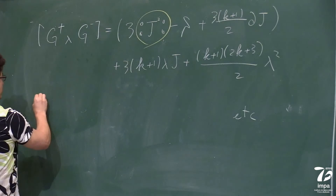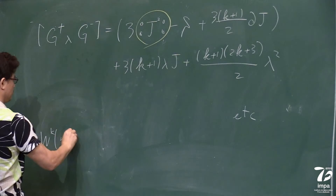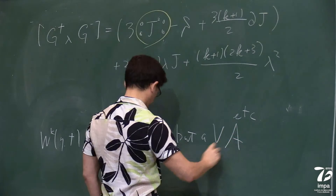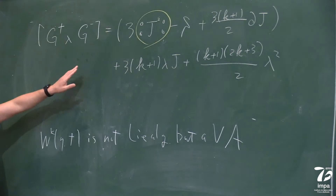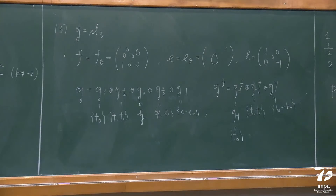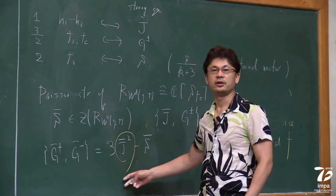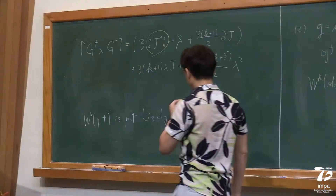The lambda bracket is not closed among generators as in the case of affine vertex algebras. This means that the W-algebra is not a Lie algebra, but really a vertex algebra. In other words, it's not generated by a Lie algebra. As the dimension of the orbit of F increases, the Poisson structure of the Slodowy slice gets more complicated with many nonlinear terms, and accordingly the W-algebra gets more and more complicated.